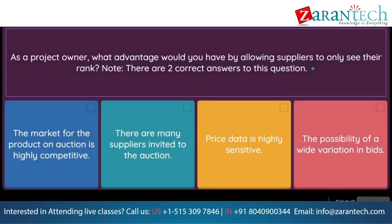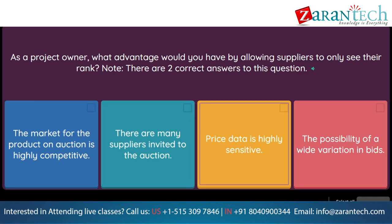Question: As a project owner, what advantage would you have by allowing suppliers to only see their rank? Note, there are two correct answers to this question. Option 1: the market for the product on auction is highly competitive. Option 2: there are many suppliers invited to the auction. Option 3: price data is highly sensitive. Option 4: the possibility of a wide variation in bids.